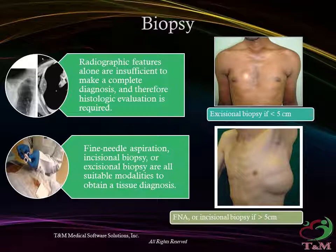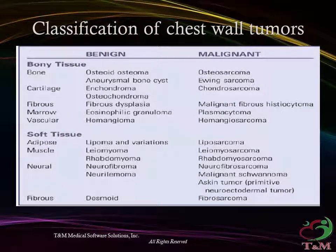Classification of chest wall tumors: these are broadly classified into benign and malignant. Further, benign and malignant chest wall tumors are subclassified according to tissue of origin, either bony or soft tissue. Benign bony tissue tumors can arise from bone, including osteoma and aneurysmal bone cysts; from cartilage, including enchondroma and osteochondroma; or from fibrous tissue, including fibrous dysplasia.